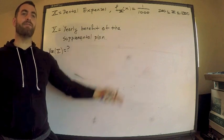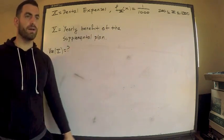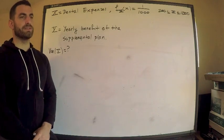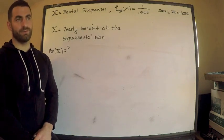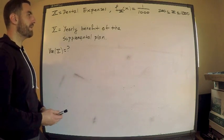Then we have a supplementary plan that kicks in after that. And they tell me basically that the supplementary plan kicks in for the dental expenses in excess of 400, but only up to 500. So let me write that down mathematically.